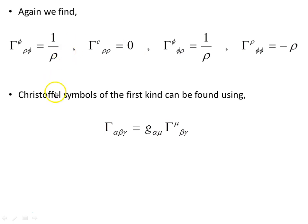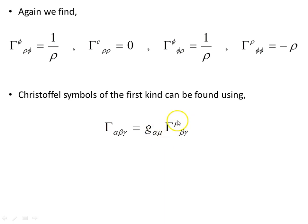Christoffel symbols of the first kind can be found using the metric to lower the upper index. The metric lowers the upper mu index, and the mu indices sum out. So we can calculate Gamma_(alpha beta) with all indices lowered. That's how we calculate Christoffel symbols — a simple example.